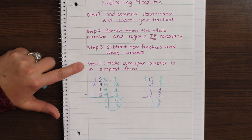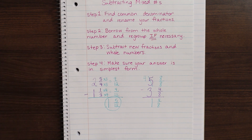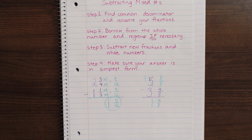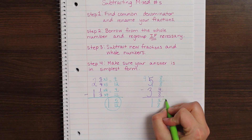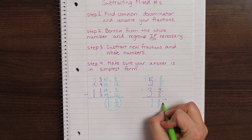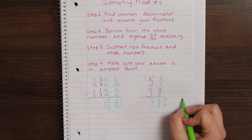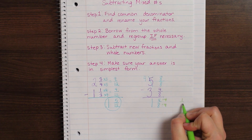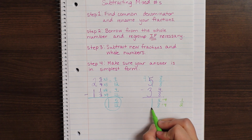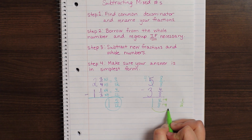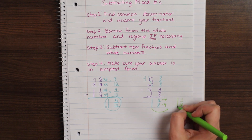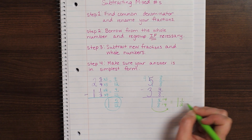Moving to step four, we make sure our answer is in simplest form. Four and eight have a common factor of four, so I divide both numerator and denominator by four to get one-half. I cannot forget to bring my whole number over as well, so my answer is one and a half.